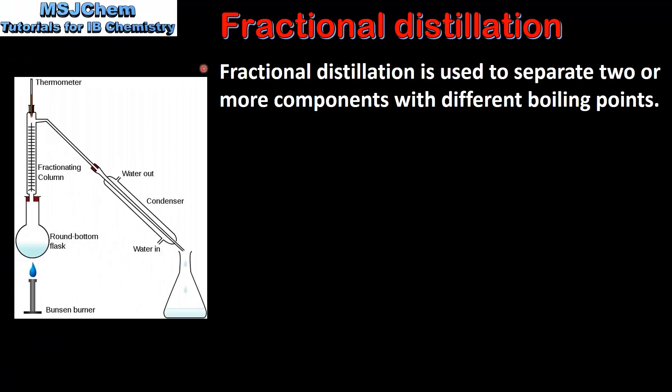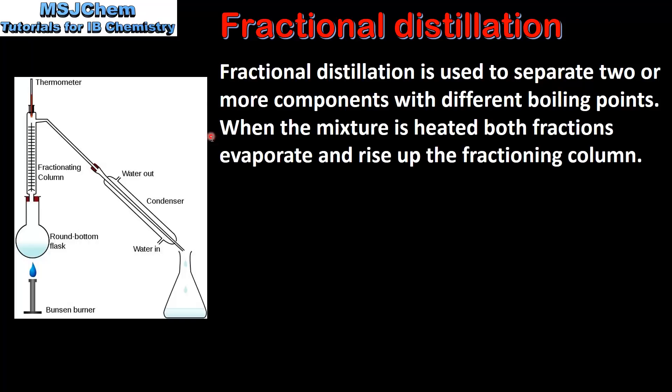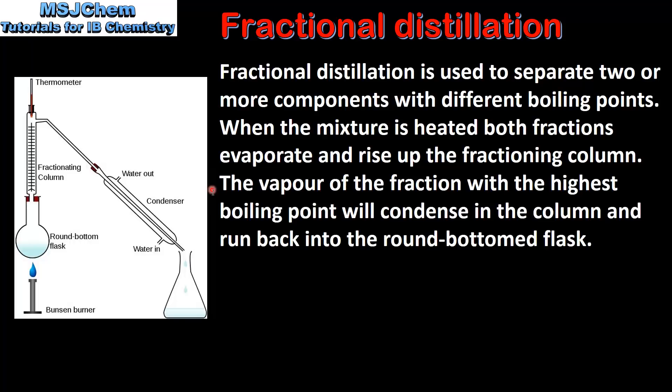Finally, we look at fractional distillation. Fractional distillation is used to separate two or more components with different boiling points. When the mixture is heated, both fractions evaporate and rise up the fractionating column. The vapor of the fraction with the highest boiling point will condense in the column and run back into the round bottomed flask. The vapor of the fraction with the lowest boiling point will enter the condenser, condense and flow into the conical flask.